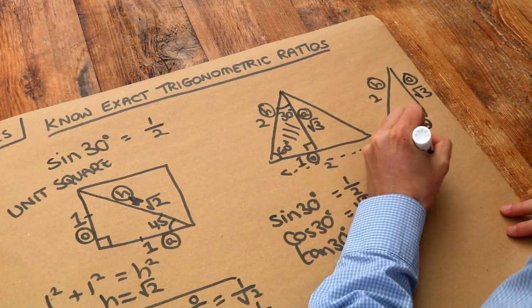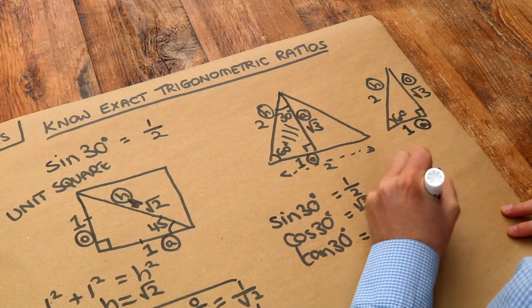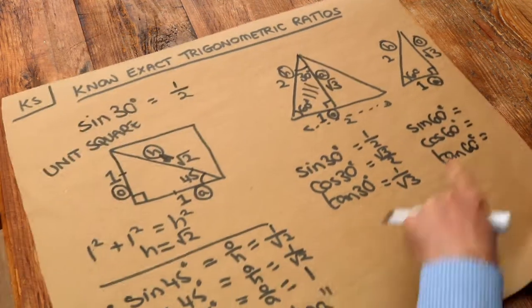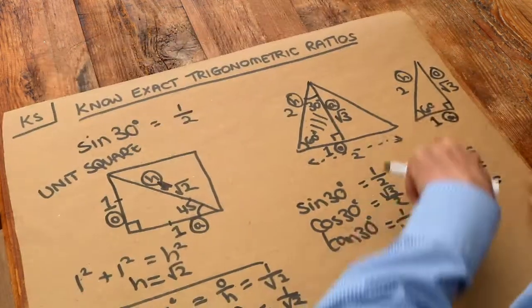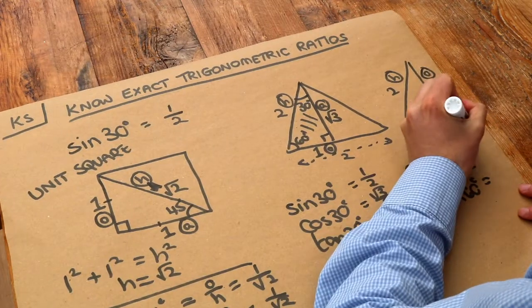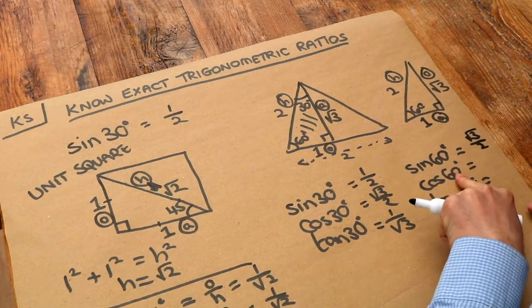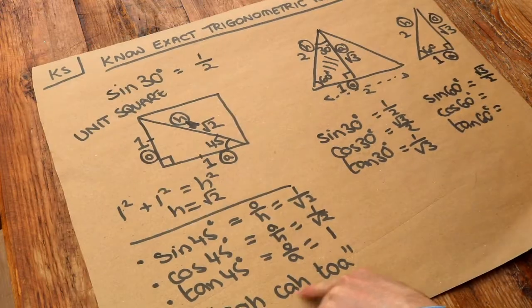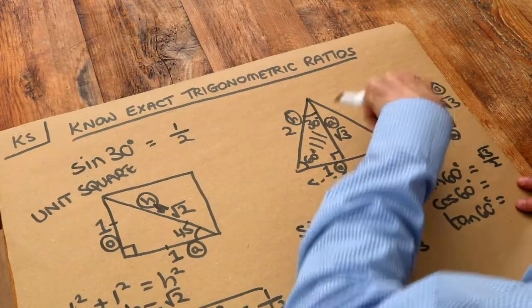And let's do the same thing. So we want sine of 60, cos of 60, tan of 60. Now sine of 60 is O over H, so root 3 over 2. Cos of 60, cos is A over H, so A over H is half.